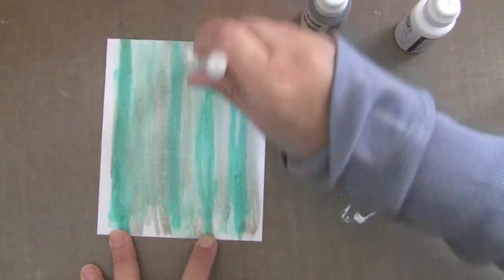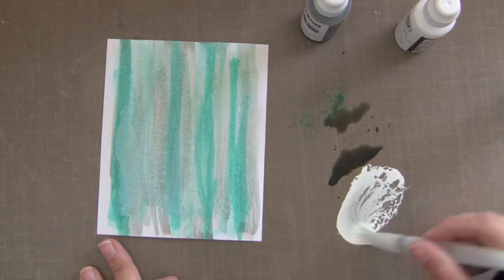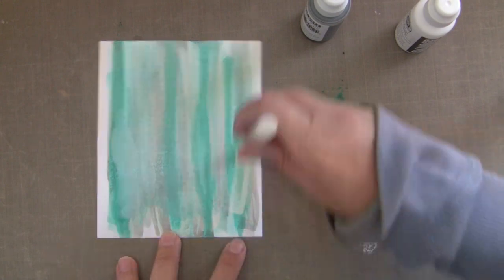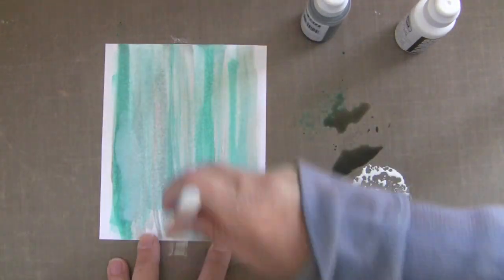Then I go over the areas I just put the dauber down with plain water. And then I like to go over the whole thing with the white. And this really softens everything and kind of helps blend it together.